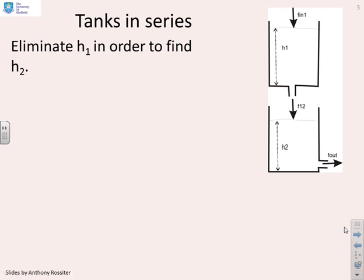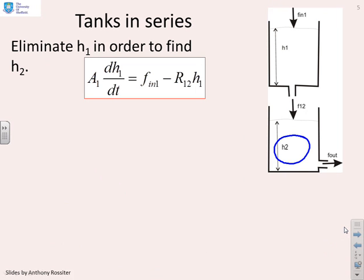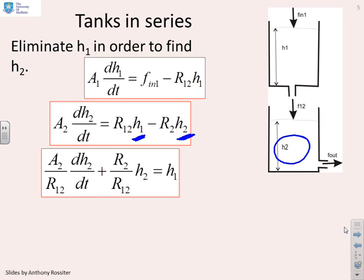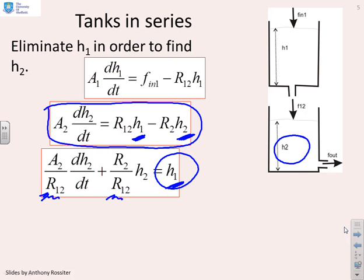What I want to do is simplify them and see if I can actually solve for the depth in tank 2. First of all, what was the equation for the depth in tank 1? There it was, A1 dh1/dt equals f_in1 minus R12 h1. And what was the equation for tank 2? There it is, A2 dh2/dt equals R12 h1 minus R2 h2. And you'll notice the problem here is this tank 2 model has got an h1 and an h2 in it. What I'm going to do is rearrange this second model here, so the h1 is on its own. You'll see what I've done is I've moved the R2 h2 to the left hand side and then I've divided throughout by R12. So now I've got an expression for h1. Now, having got an expression for h1, I can put it in there and I can put it in there. And in doing so, I will eliminate h1 from the equation.